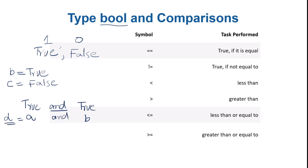True and True is always True. True and False is always False. This is commutative: True and True is True, True and False is False, False and True is False, False and False is False. So if you apply the 'and' operator to combine two boolean variables — if both are True then the result is True, otherwise 'and' returns False.